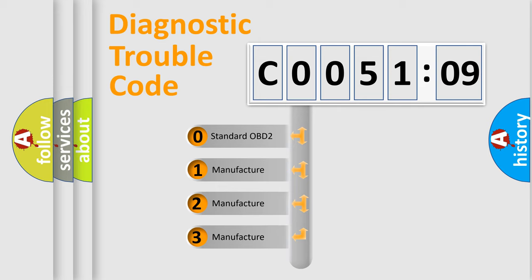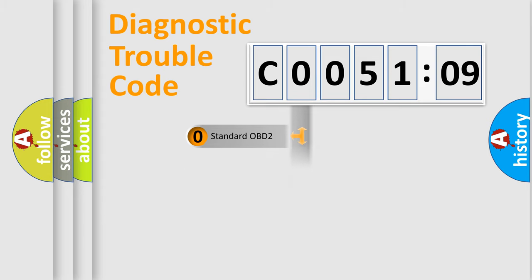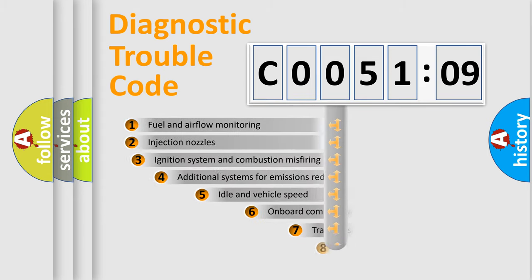If the second character is expressed as zero, it is a standardized error. In the case of numbers 1, 2, or 3, it is a manufacturer-specific expression of the car-specific error.